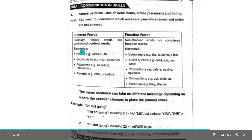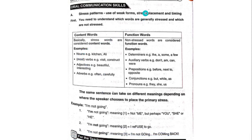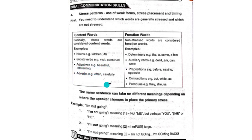Stress patterns: use of weak forms, stress placement, and timing. First, you need to understand which words are generally stressed and which are not. Content words — basically, stressed words are considered content words. For example: nouns (kitchen, Ali), most verbs (visit, construct), adjectives (beautiful, interesting), adverbs (often, carefully).